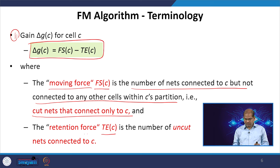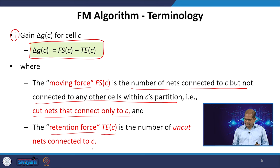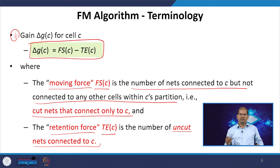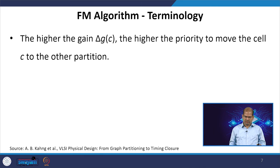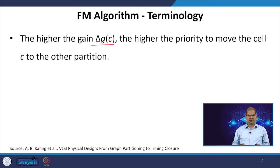The second term Te(C) is called the retention force. Retention force means: if I keep that cell in the same partition, what is the benefit? Te is the number of uncut nets connected to C — nets not passing through the cut line. The retention force says you should keep that cell in the same partition. The gain delta G = Fs(C) − Te(C). Higher delta G means we should give more priority to moving that cell to the other partition.